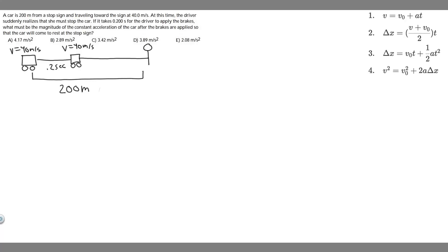In this problem, we're told the car is 200 meters from a stop sign and traveling towards the sign at 40 meters per second. At this time, the driver suddenly realizes that she must stop the car. If it takes 0.2 seconds for the driver to apply the brakes, what must be the magnitude of constant acceleration of the car after the brakes are applied so that the car will come to rest at the stop sign?